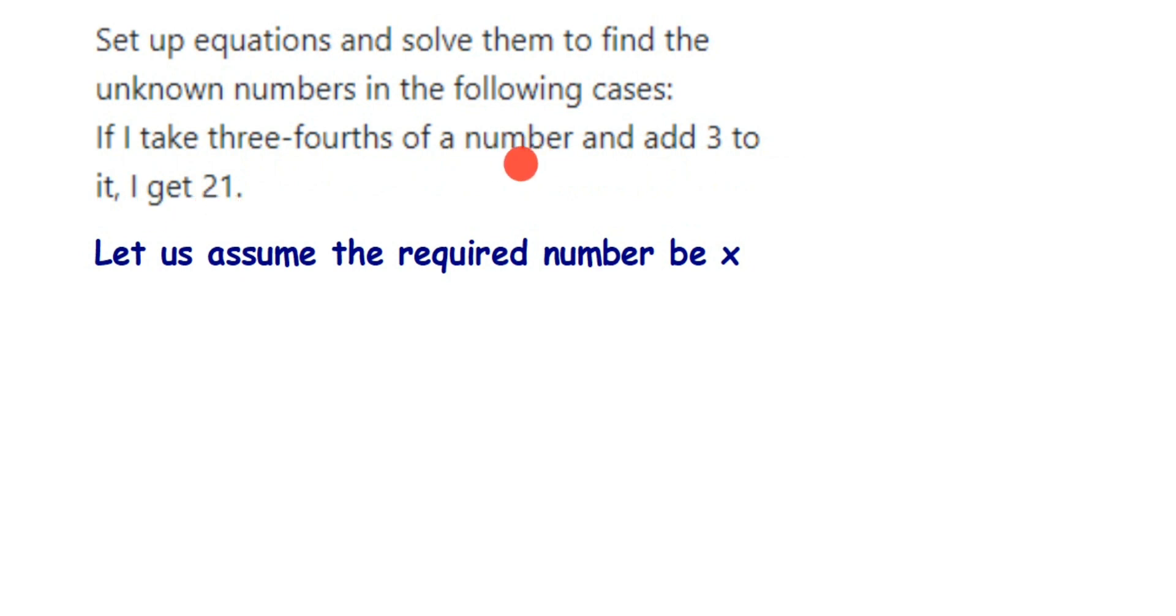Now the number we're talking about, we don't know this number, so here I'm gonna assume the required number to be variable x. Okay, I'm gonna form my equation now. What is given? They have given three-fourths of a number, so three-fourths means 3 by 4 multiplied by x. Of a number, add 3 to it, so I'm gonna add 3, so plus 3, and I'll get 21. So when I do the whole thing, this will be equal to 21.